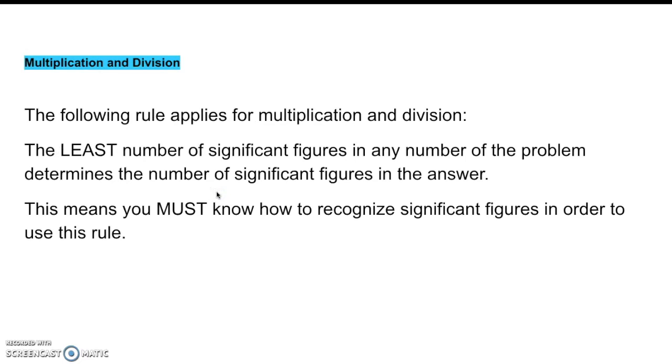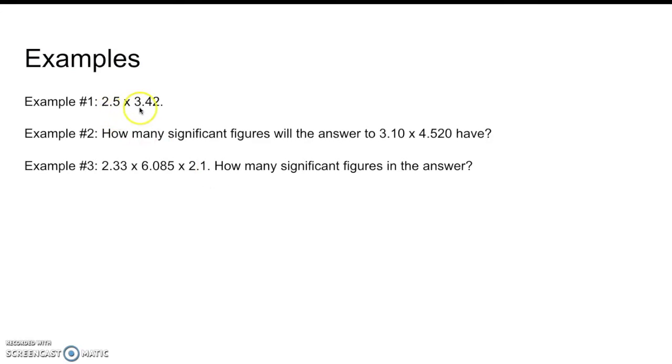Okay, now with multiplication and division, here's a rule that's different than addition and subtraction. It goes by the least number of sig figs, and any number of the problem determines the number of sig figs in the answer. So we must recognize significant figures of all the numbers that we're multiplying and dividing by in order to use this rule. So, for example, 2.5 times 3.42. Two sig figs, three sig figs. When I get my answer, I want to round it to two sig figs.